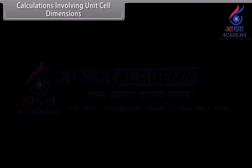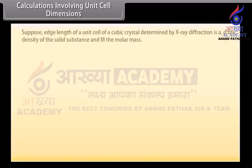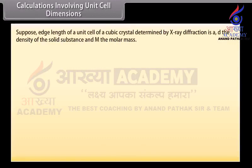Calculations involving unit cell dimensions: Suppose the edge length of a unit cell of a cubic crystal determined by X-ray diffraction is A, D is the density of the solid substance, and M is the molar mass. In the case of a cubic crystal, the volume of a unit cell is equal to A³.